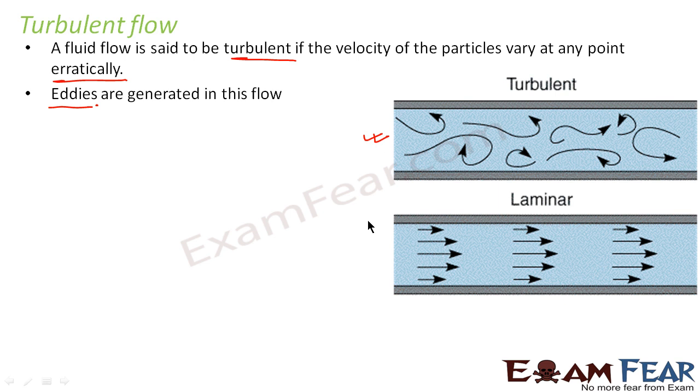You can have a look at this figure to have a very clear picture of laminar and turbulent flow. In laminar flow, you can see that all the particles are moving in paths which are parallel to each other in a proper fashion. At every point, all the particles have the same velocities, and none of them are intersecting each other.